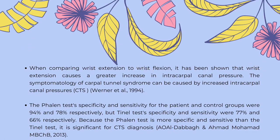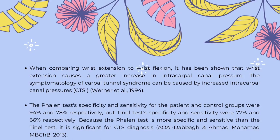Thirdly, according to a previous study by Wenner et al. in 1994, they state that when wrist extension is compared to wrist flexion, it has been discovered that wrist extension results provide a greater increase in intracarpal canal pressure. Increased intracarpal canal pressure can induce the symptoms of carpal tunnel syndrome. And lastly, a study by Ahmad Muhammad in 2013 claims that the Valen test had specificity and sensitivity of 94% and 78% for the patient and control group respectively, whereas the Tinel test had specificity and sensitivity of 77% and 66% respectively. Therefore, the Valen test is useful for CTS diagnosis since it is more specific and sensitive than the Tinel test.